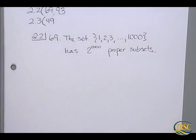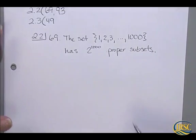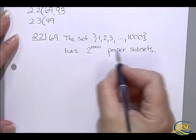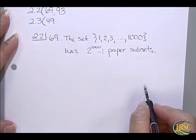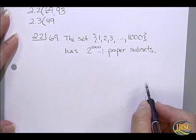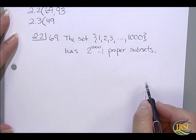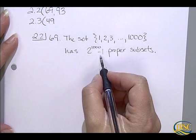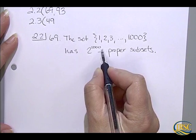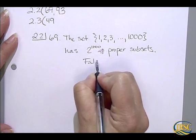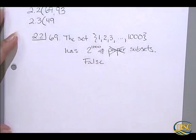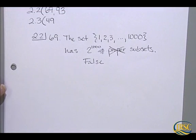We have to determine whether this is a true or false statement. False. There are two ways you could correct the statement. Because it says proper subsets, you would have to fix this by subtracting 1 from 2 to the 1,000. The other way is to cross out the word proper and eliminate it, because there are 2 to the 1,000 subsets total. So either subtract 1 from that number, or eliminate the word proper.